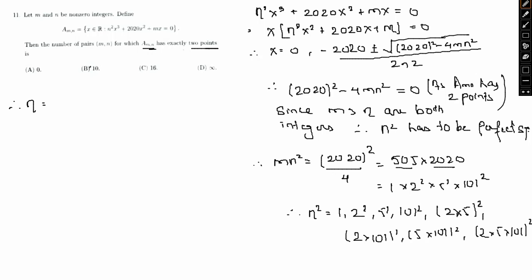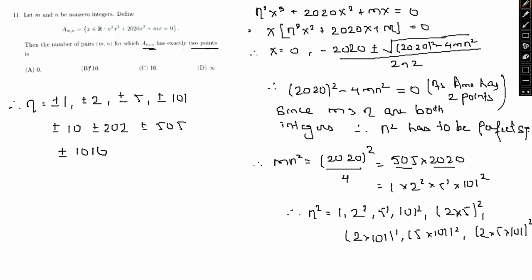Therefore n can take the values ±1, ±2, ±5, ±101, ±10, ±202, ±505, and ±1010. That gives 8 distinct absolute values, and since both positive and negative signs are considered, n can take 8 × 2 = 16 values. So our answer is 16.